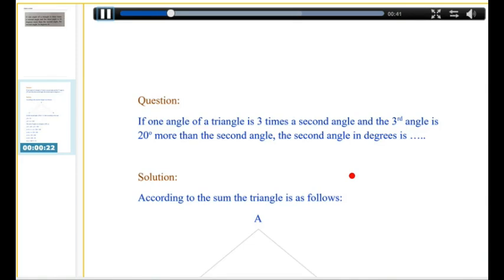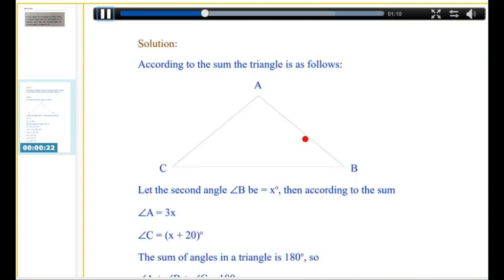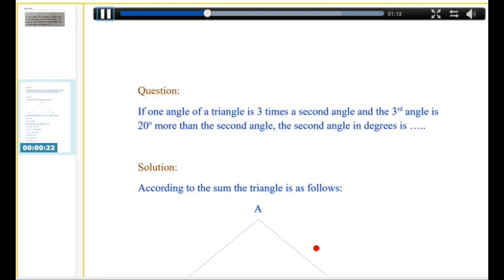Here is a sum on angles of a triangle in geometry. The question is, if one angle of a triangle is three times the second angle, and the third angle is 20 degrees more than the second angle, the second angle in degrees is. So here, we need to take the second angle as x.